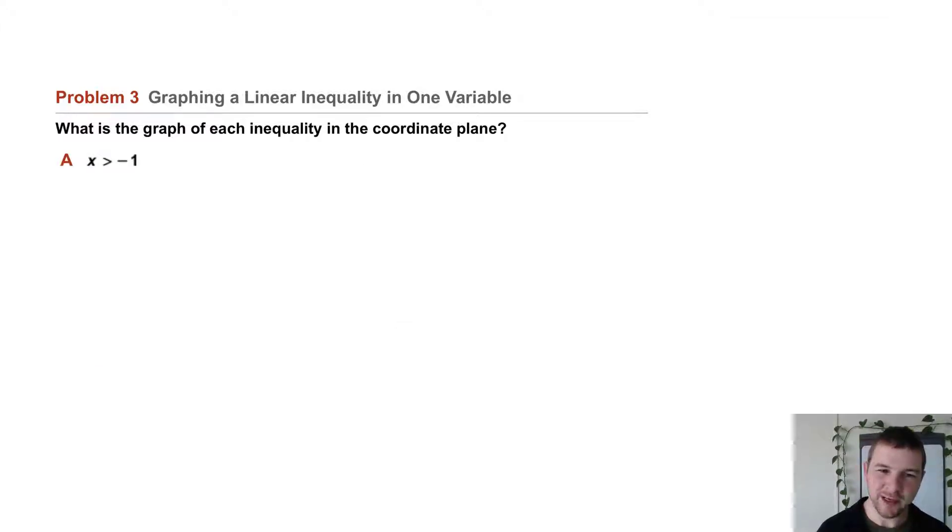Part A, x is greater than negative 1. First we graph the related equation x equals negative 1 using a dashed line because we're not including values at negative 1, but only values greater than negative 1.